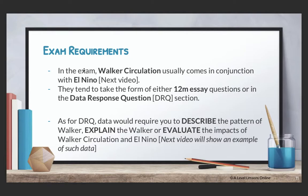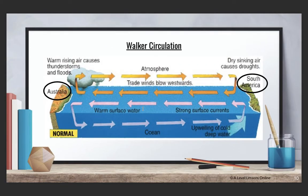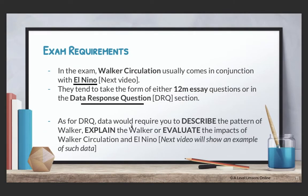That's all for the content on Walker Circulation — it's actually very straightforward. In the exam, Walker Circulation usually comes in conjunction with El Niño, which I'll talk about in the next video. They tend to take the form of either 12-mark essay questions or data response questions. Data response questions can involve, for instance, drawing the entire Walker Circulation, or they may ask you to describe the pattern — you'll see data asking you to describe the Walker Circulation or El Niño, explain it, or evaluate the impacts. Impacts could be things like drought, wet weather, flooding — how do they affect your social, economic, and environmental factors.